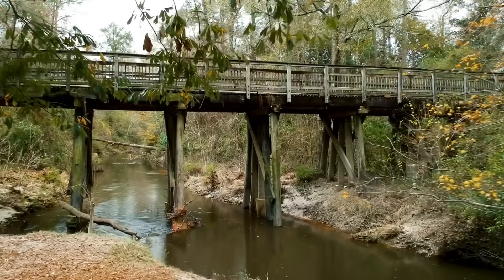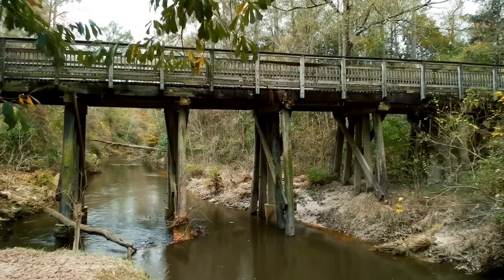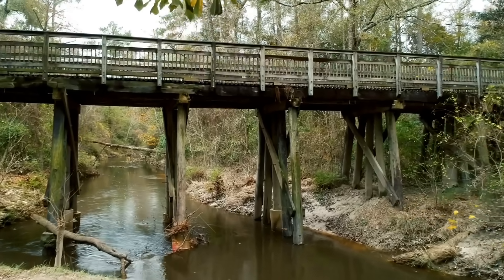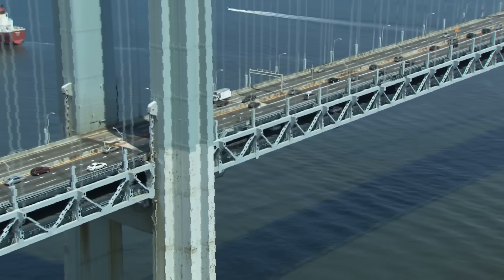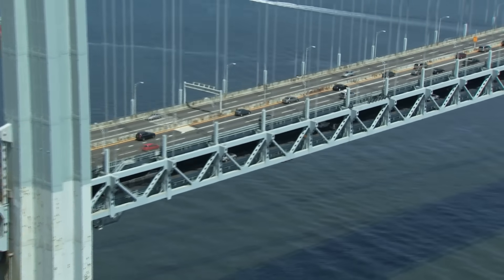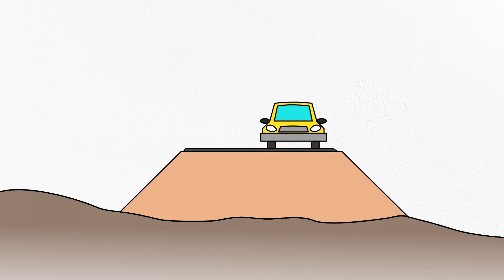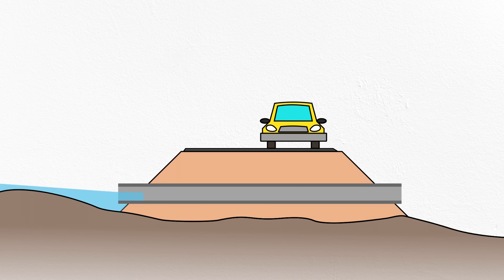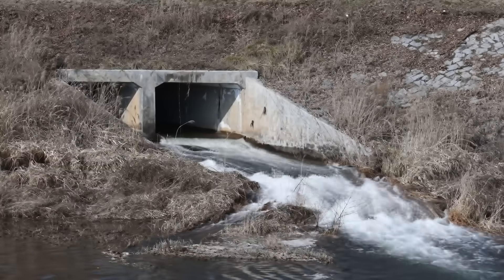One obvious solution to this obvious problem is a bridge — the classic way to drive a vehicle over a body of water. But bridges are expensive. You have to hire a structural engineer, install supports, girders, and road decks. It's just not feasible for most small creeks and ditches. So instead, we do fill the low spots in, but we include a pipe so the water can get through. That pipe is called a culvert, and there's actually quite a bit of engineering behind this innocuous bit of infrastructure.